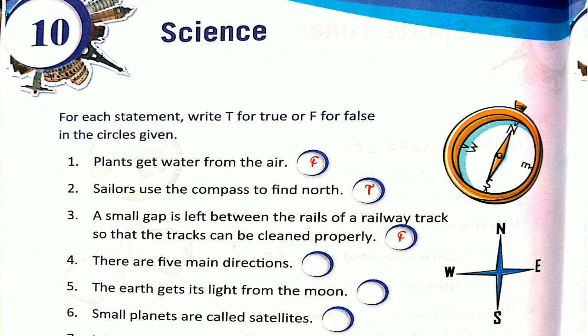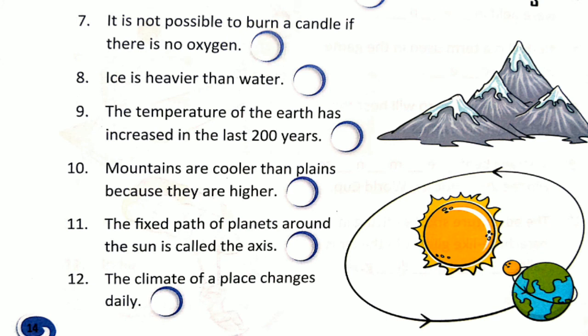Number 4: There are 5 main directions. This is false — there are 4 main directions: north, south, east, and west. Number 5: The earth gets its light from the moon. This is false — the earth gets light from the sun. Number 6: Small planets are called satellites. This is false. Number 7: It is not possible to burn a candle if there is no oxygen. This is true — oxygen is needed to burn a candle.